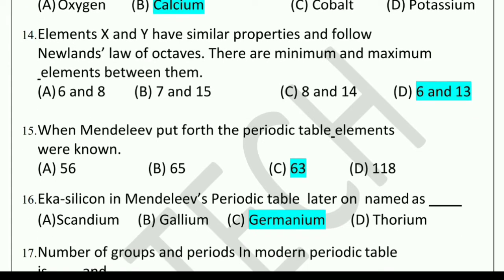Fourteenth question: Elements X and Y have similar properties and follow Newland's law of octaves. There are minimum and maximum elements between them. How many are those? Options are 6 and 8. The correct answer is option D: 6 and 13.